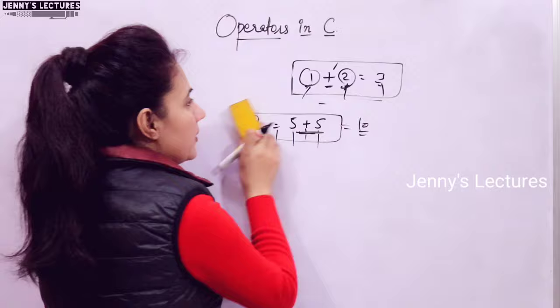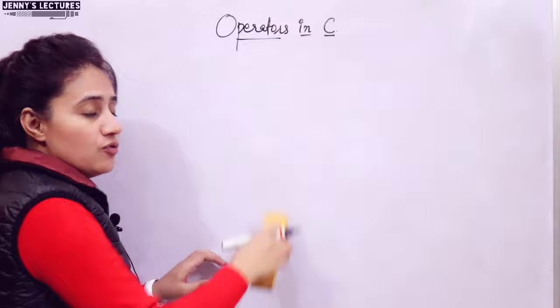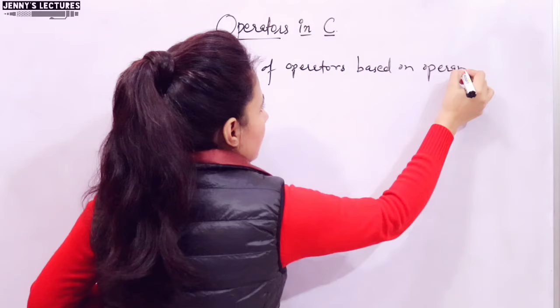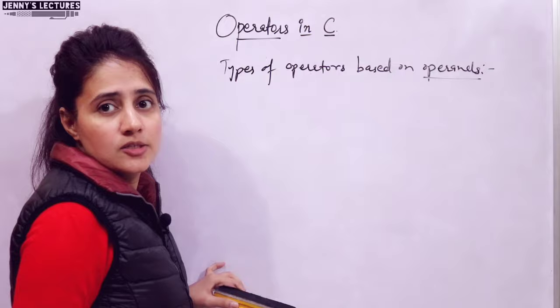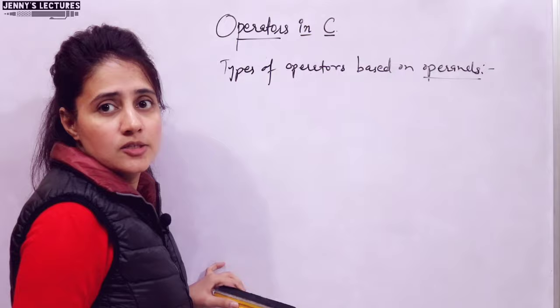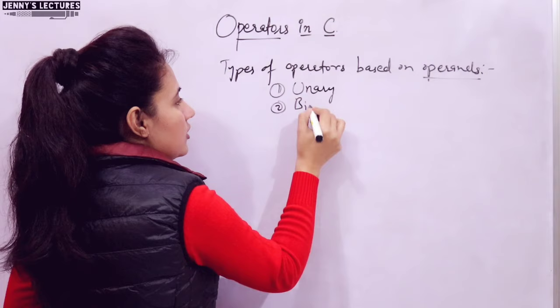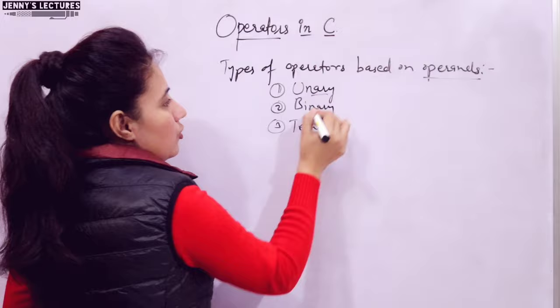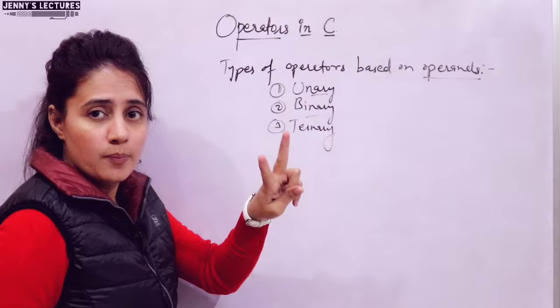Types of operators are classified in two ways: based on operands and based on operations. Based on the number of operands, there are three types: unary, binary, and ternary operators. Unary means only one operand, binary means two operands, and ternary means three operands.